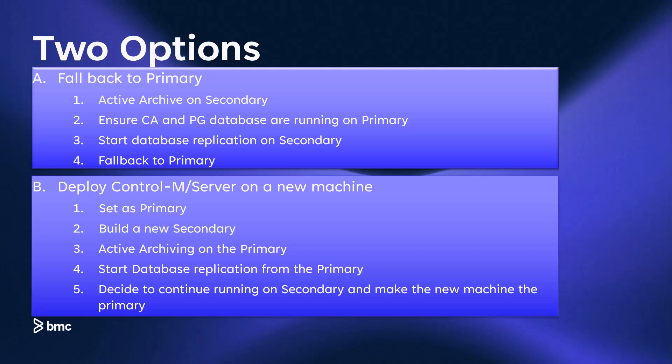Ensure Postgres database is up on the primary and ensure that the configuration agent is up on the primary and running. Then start the database replication on the secondary. You can then fallback to the primary at your convenience as you have a full functioning HA environment after replication was initiated. Option B: deploy a CTM server on a new machine. When the primary machine is not recoverable, this option will allow you to quickly recreate the CTM high available environment with minimum disruption to your current working environment. Step one, set the secondary environment as primary. Step two, install on the new machine a secondary CTM server — the secondary installation requires no downtime on the primary.